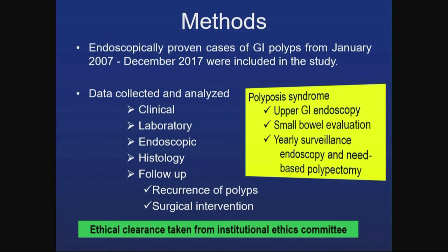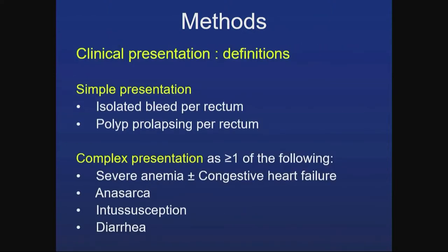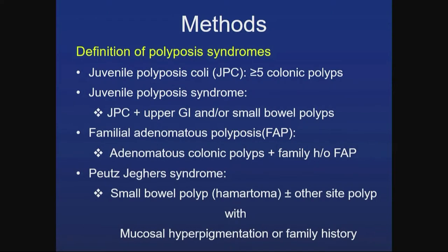We enrolled patients from 2007 to 2017, collecting and analyzing clinical, laboratory, endoscopic, histological, and follow-up data. Polyposis syndrome patients additionally underwent upper GI endoscopy, small bowel evaluation, and yearly surveillance endoscopy and polypectomies. Ethical clearance was taken. Simple presentation was defined as bleed PR and polyp prolapse, while complex presentation included severe anemia, anasarca, intussusception, and diarrhea. Standard criteria were used for defining polyposis syndromes.